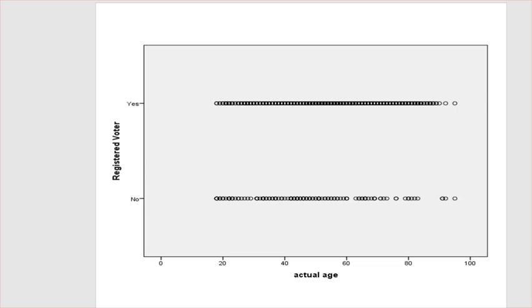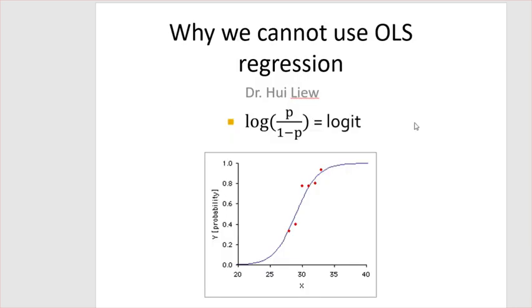this diagram does not provide a clear picture of the nature of relationship between age and voting registration. We can only see two straight lines. But if we use logistic regression,